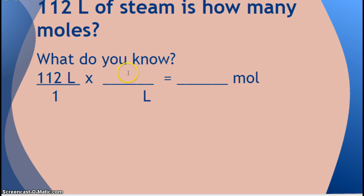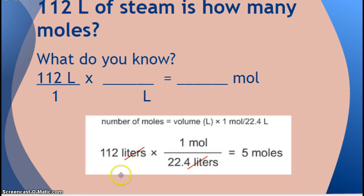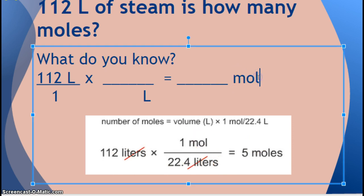And so, what are we going to put on the top here? Moles. And one mole at STP is how many liters of any gas? 22.4. And again, they cancel off. And we're going to put that in our calculator. So what you're actually putting in your calculator is 112 times 1 divided by 22.4. And when you put that in your calculator, you get 5.